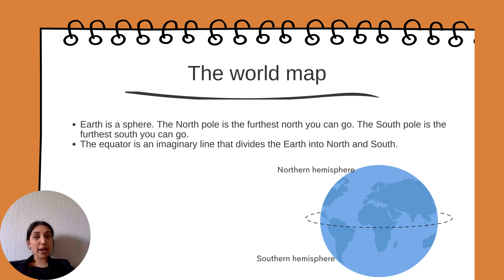The world map. Earth is a sphere. The north pole is the furthest north you can go. The south pole is the furthest south you can go. The equator is an imaginary line that divides the earth into the north and the south.